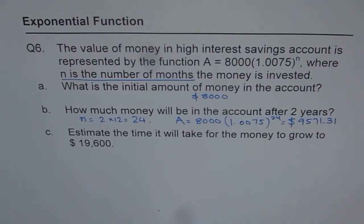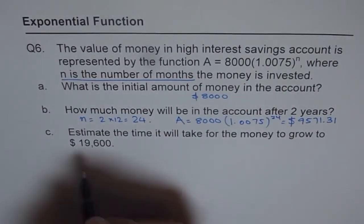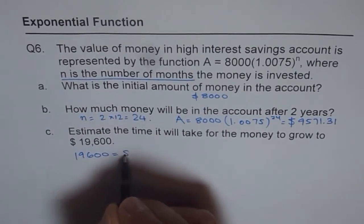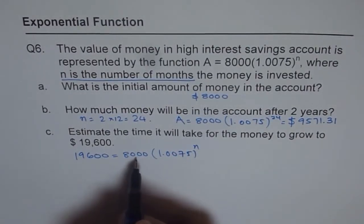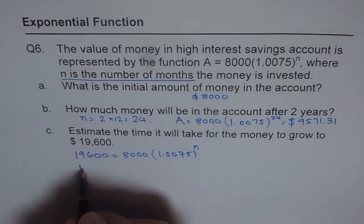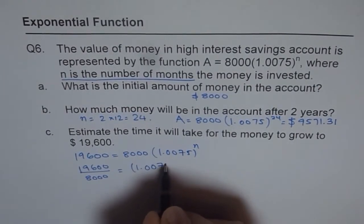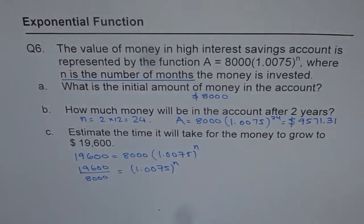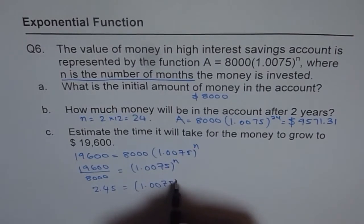Part C: estimate the time it will take for the money to grow to $19,600. That means amount is given to us and we need to find N, the time. So, we can write this equation as 19,600 equals 8,000 times 1.0075 to the power of N. Now, we can divide 19,600 by 8,000. So, let me write down 19,600 divided by 8,000 equals 1.0075 to the power of N.